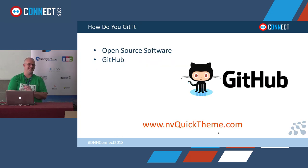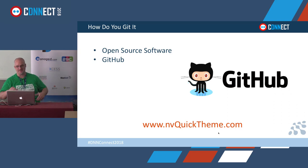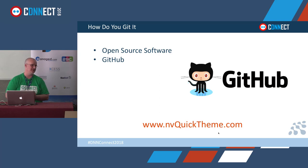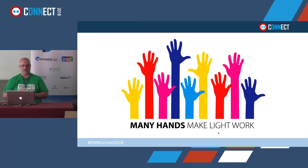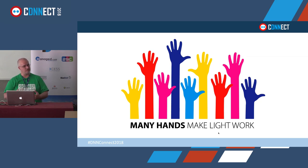How do you get it? You see what I did there - git, get, yeah, okay. NVQuick Theme is available on GitHub - it's a free open source project and there are people actively participating in making it better. You can also go to nvquicktheme.com. Why would we put all this effort into something and give it away for free? We use it internally to help with our client projects and internal projects to create themes.